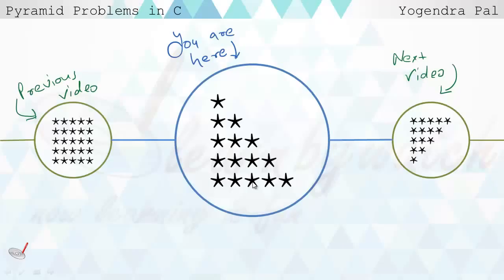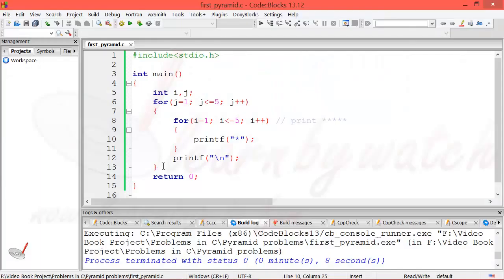Hello friends, I am Yogendra Pal and today in this video I am going to talk about this pyramid. This is a right-angled pyramid and we are going to make it in C programming language. In our previous video I taught you how you can make this pyramid, and now we will convert it into this one. In case you didn't watch my previous video, click here and then come back to this video. So let's begin.